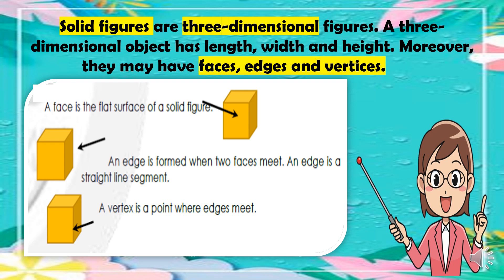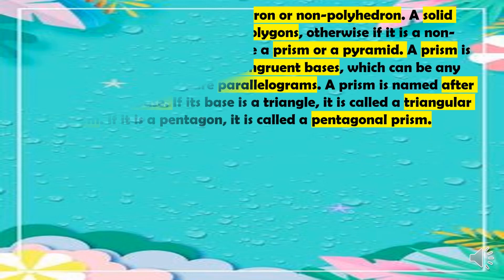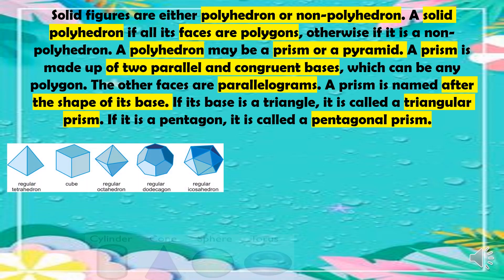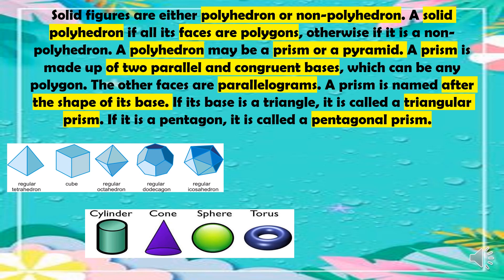A face is the flat surface of a solid figure. An edge is formed when two faces meet, and an edge is a straight line segment. A vertex is a point where edges meet. Solid figures are either polyhedron or non-polyhedron. A solid is a polyhedron if all its faces are polygons; otherwise it is non-polyhedron. A polyhedron may be a prism or a pyramid.